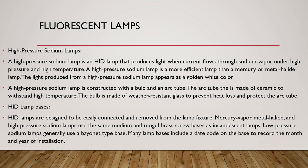High pressure sodium lamp: a high pressure sodium lamp is an HID lamp that produces light when current flows through sodium vapor under high pressure and high temperature. It is a more efficient lamp than mercury or metal halide lamps. The light produced appears as a golden white color. The lamp is constructed with a bulb and an arc tube. The arc tube is made of ceramic to withstand high temperatures, and the bulb is made of weather-resistant glass to prevent heat loss and protect the arc tube.